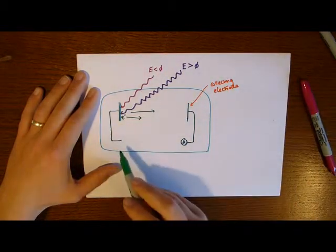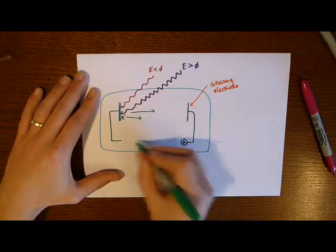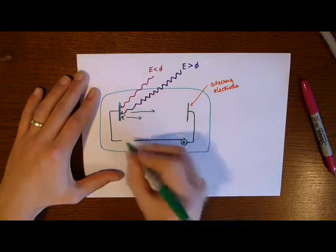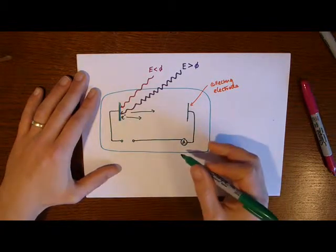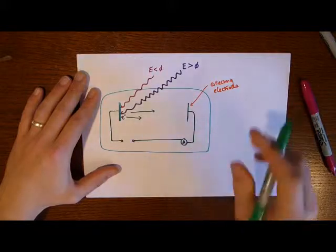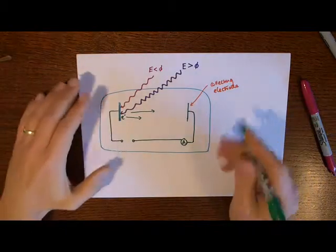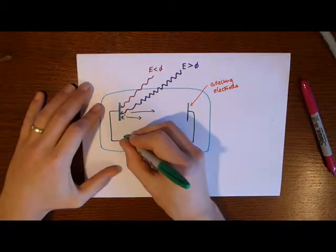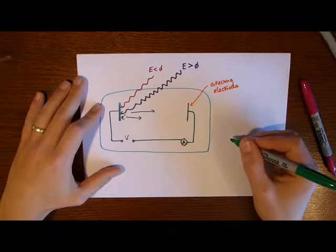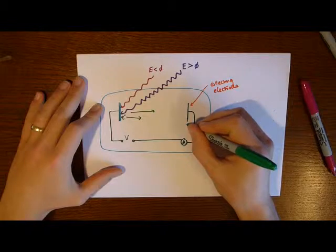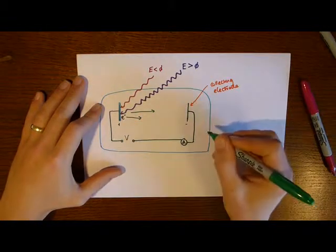Now I haven't completed the circuit yet deliberately, because what Einstein did is he then put a power supply in between the two. Now his circuit is a little bit more complex. You can go and look it up in the book. It involves a potential divider to control the voltage, but this is the basic idea. So he put a variable voltage inside here, voltage V, and he could change that. What he did is he made this plate become negative, and he made this plate become positive.